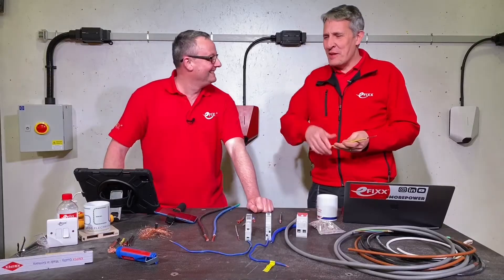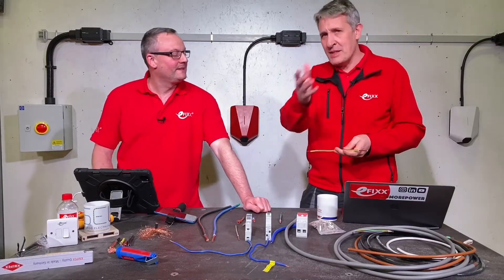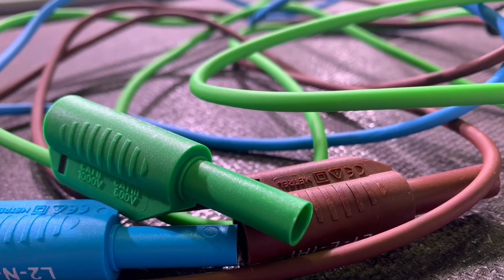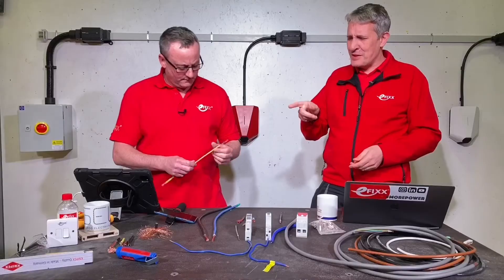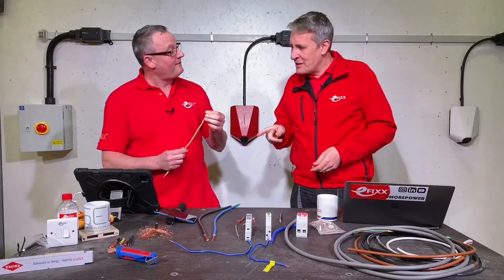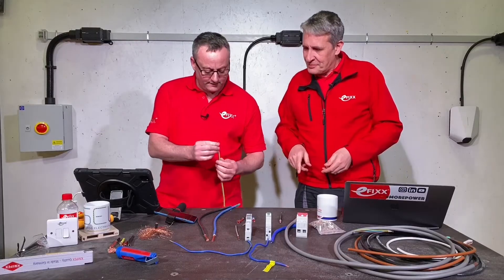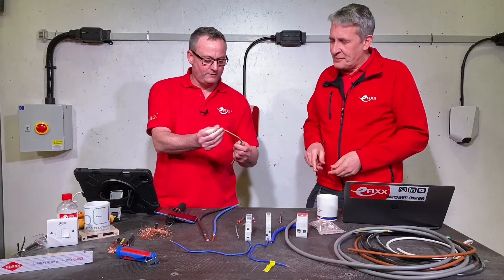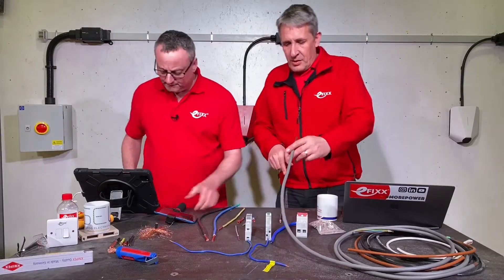In real-world terms, class 6 conductors are very flexible and you'll come across them in your test leads and the wire that connects up your multifunction tester. There are seven conductors in the earthing conductor, making it a little bit more flexible for that fixed wiring situation. We've also got some tails down there with a few more conductors in those.